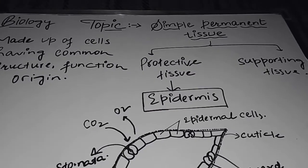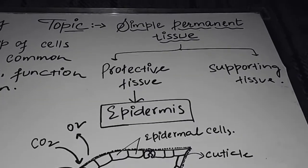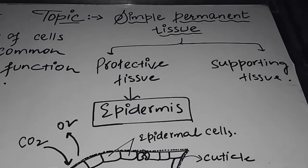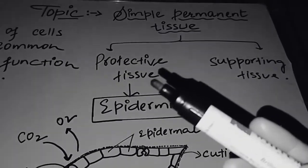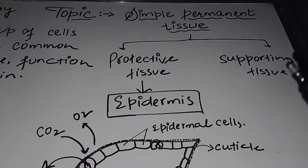However, in complex permanent tissue, the cells are different. There are many types. Right now today we will focus on simple permanent tissue and on protective tissue.